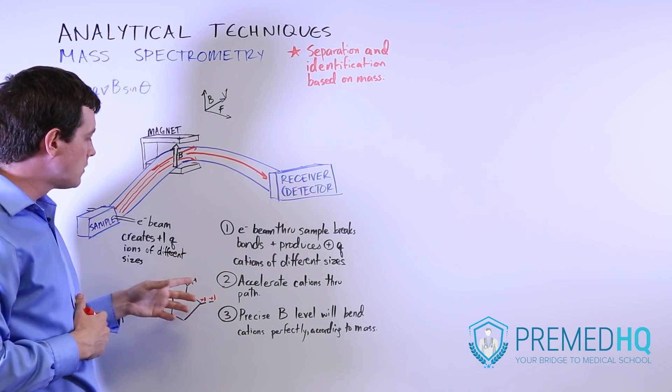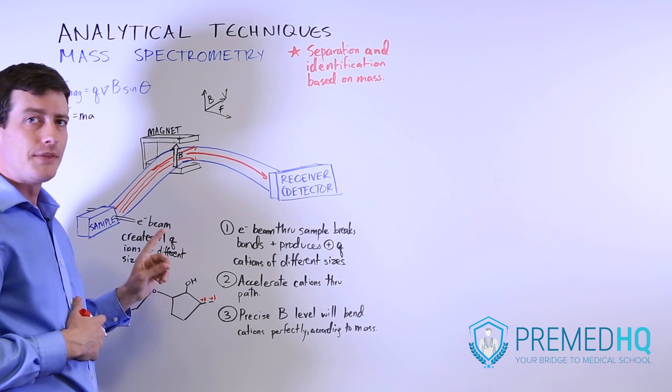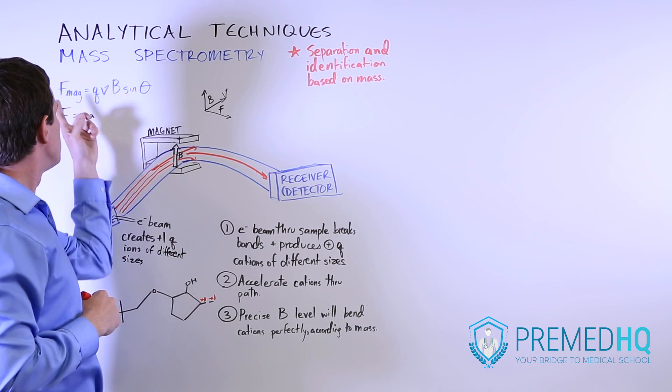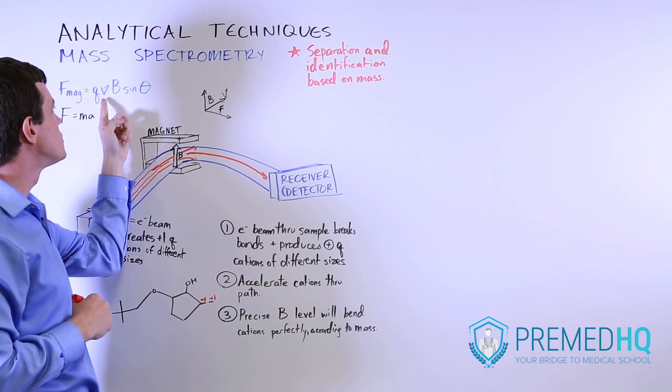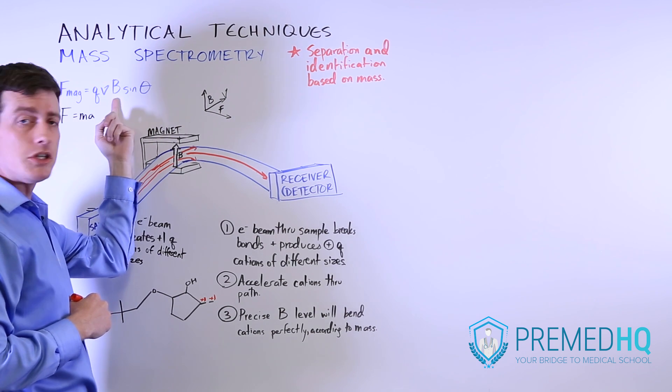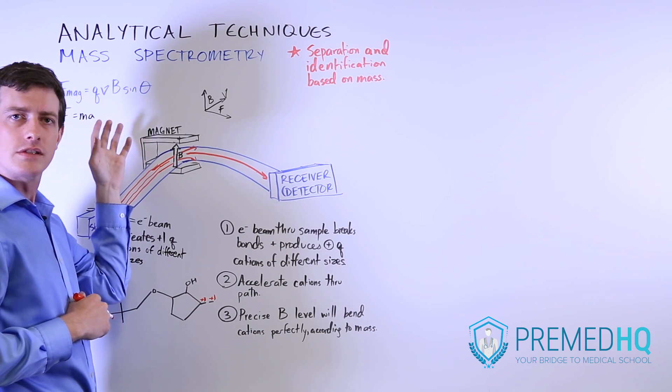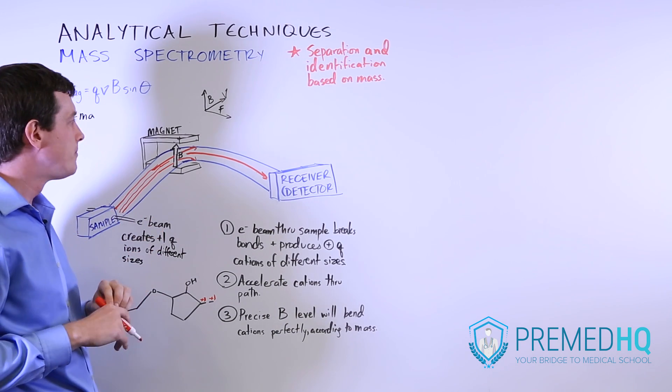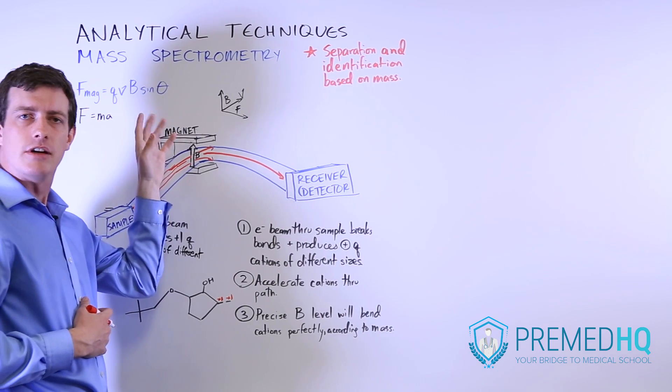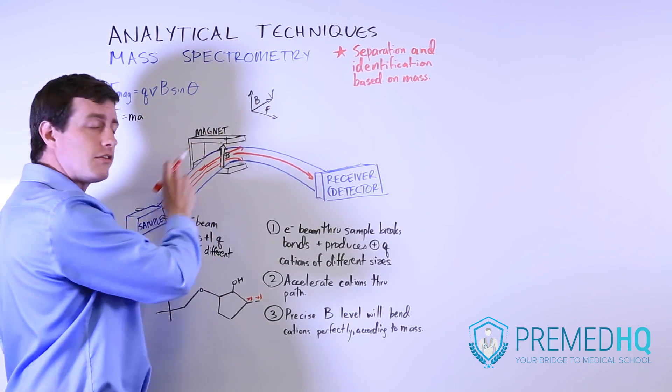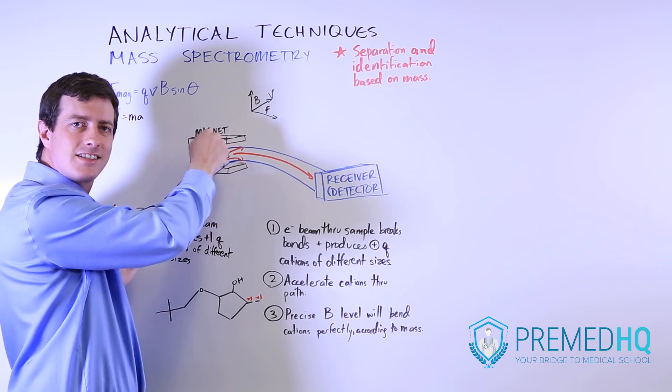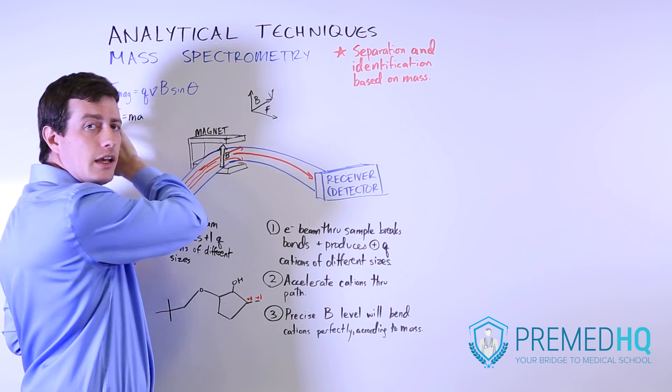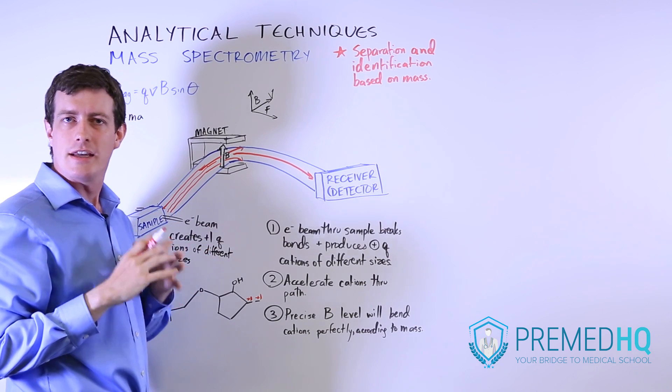Realize that because all of these have a charge of plus one, they're going to experience the same force if they're in the same magnetic field. Because the magnetic force equals Q, which is the charge, times the velocity, times B, which is your magnetic field force, and sine theta, which is irrelevant because we're only using right angles in this situation. It doesn't care about the mass of the compound as much as it cares about its velocity. All of these different compounds will have the same velocity and the same charge, so if they experience a magnetic field, they will all experience the same magnetic force.